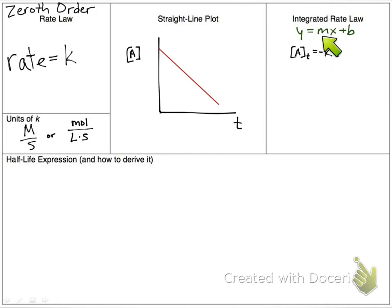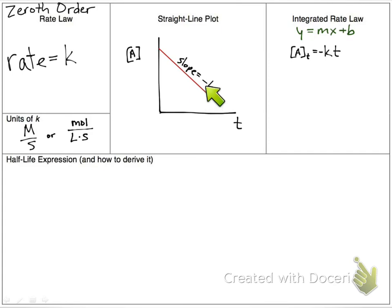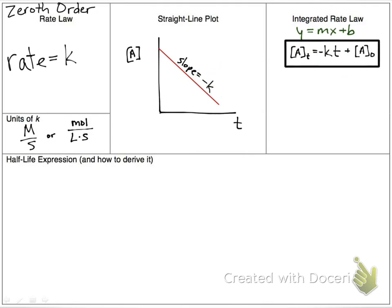For our slope, it's going to be the opposite of k. Because our line has a negative slope, we take the opposite of that slope to get our k value — k has to be positive, so we have a negative sign there. The slope is negative k. And then our y-intercept is the concentration at time zero, which means the initial concentration of A.